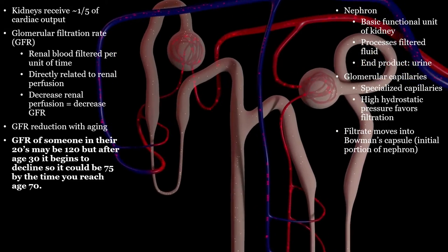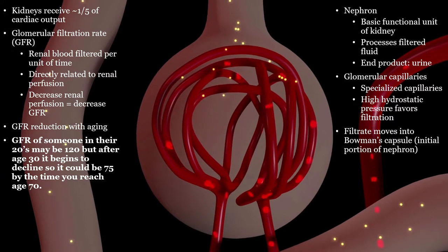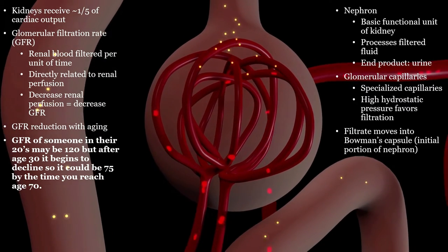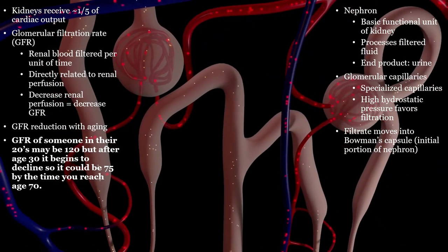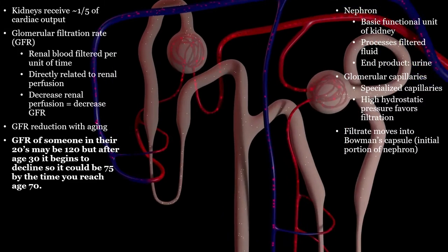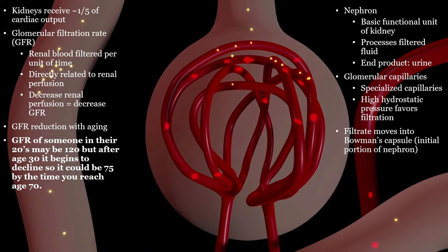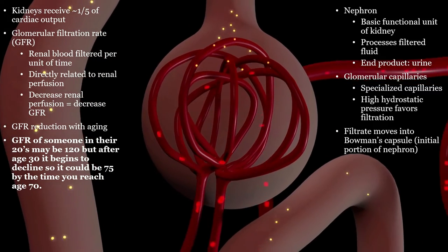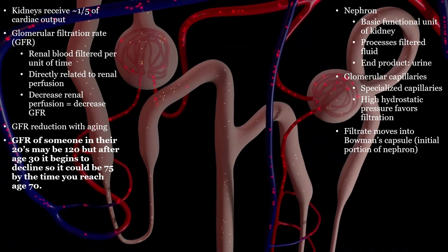The kidneys receive a whopping one-fifth of the cardiac output. The way we calculate how well the kidneys are functioning is by the GFR, or glomerular filtration rate. If the GFR is high or increased, then kidney function is good. If the GFR is low or decreased, then the kidney function is worsening. GFR naturally worsens or decreases with aging, but many other factors can affect it. The basic unit of the kidney is the nephron. Each one will filter the blood and push waste into the urine. The glomerular capillaries' high pressure allows for filtration to take place - this is passive transport and diffusion influenced by blood pressure.